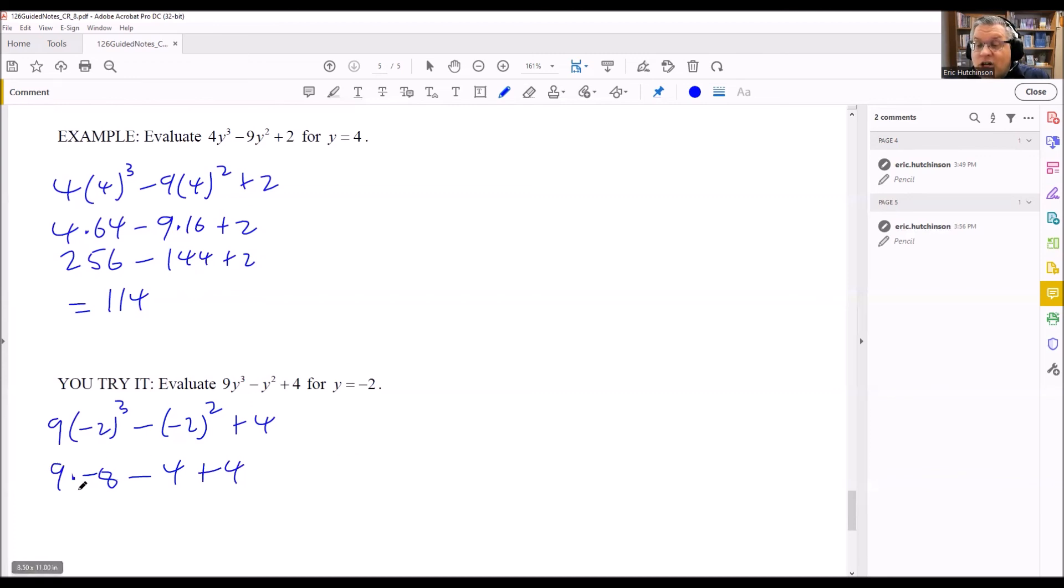This is 9 times negative 8 is negative 72 minus 4 plus 4. Now the minus 4 and plus 4, that's going to add up to 0. So your final answer here is just going to be negative 72 because everything else is going to be 0. So again, evaluate just means that you want to find a numerical answer, but you're still doing the same process, replacing the variable with whatever number they tell you.